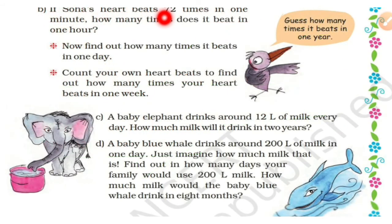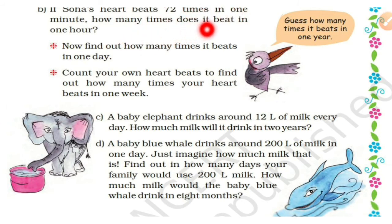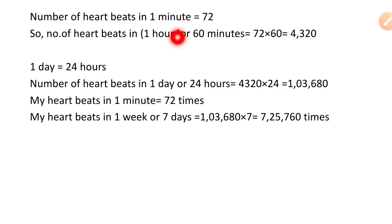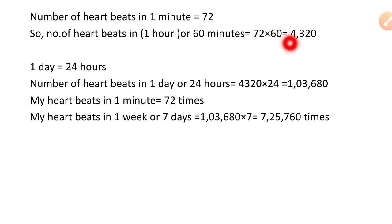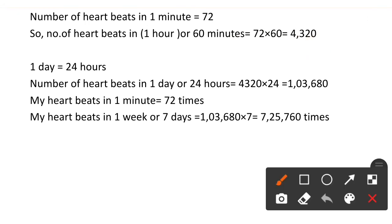If Soha's heart beats 72 times in one minute, how many times does it beat in one hour? Soha's heartbeats 72 times per minute. Number of heartbeats in 1 hour: 1 hour = 60 minutes, so 72 × 60 = 4,320 times heartbeats. Here we multiply 72 and 60.